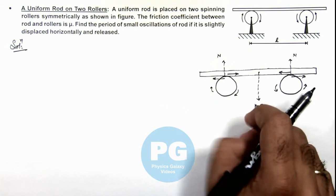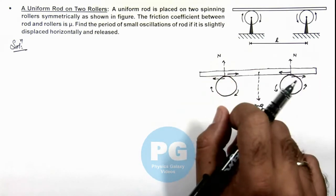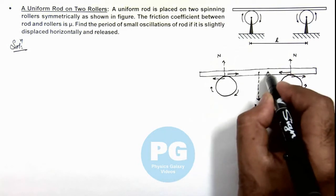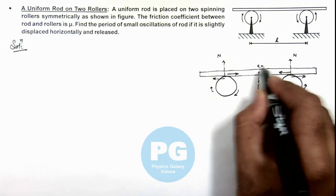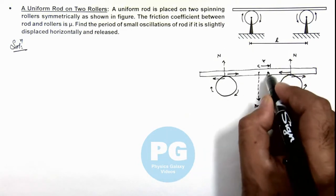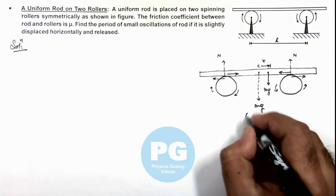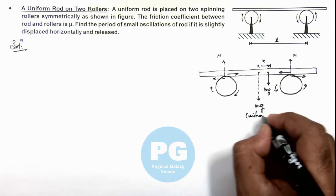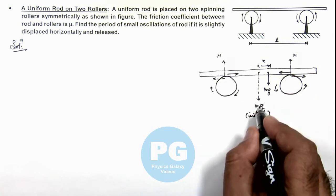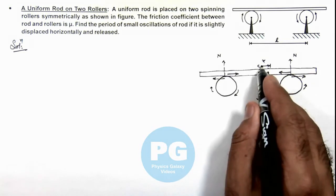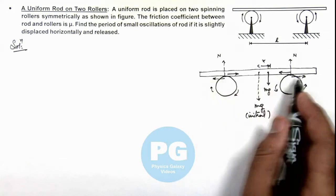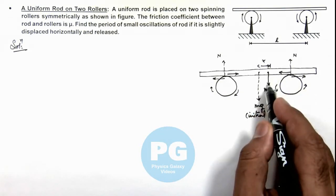And when we slightly displace the rod toward right by a distance x, this center will shift by a distance x and now this is the point where mg would be acting. This was the initial position where mg was acting, and after distance x when the rod is shifted, mg would be acting here.